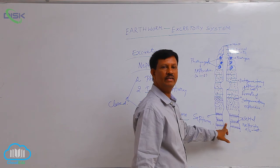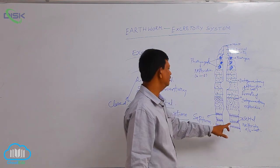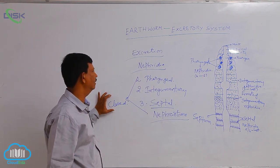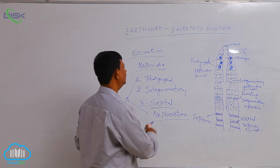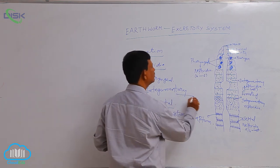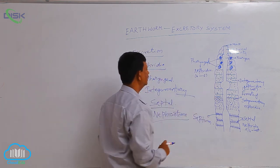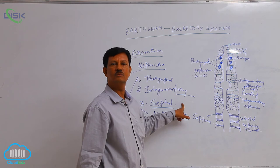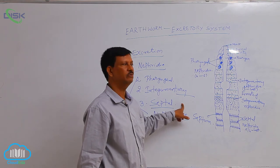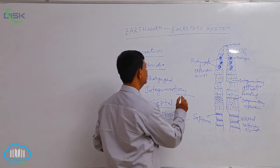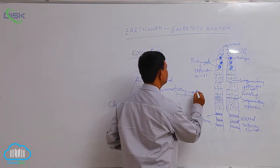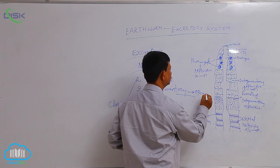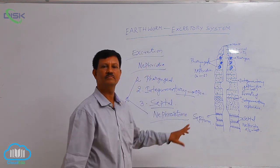Both pharyngeal and septal nephridia open into the alimentary canal, hence they are known as closed nephridia. Integumentary nephridia do not open into the alimentary canal — they open to the outside through small pores known as nephridiopores, which is why they are known as open nephridia.